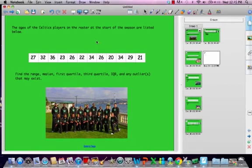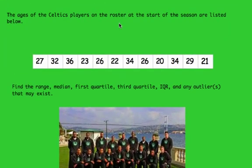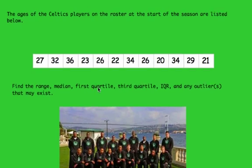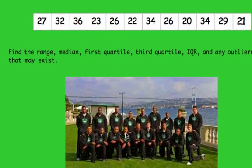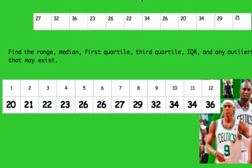Introducing the Boston Celtics! We have the ages of the Celtics players on the roster at the start of the season listed below. These are actual numbers — this is a real problem. We have to find the range, the median, the first quartile, the third quartile, the interquartile range, and any outliers that may exist.